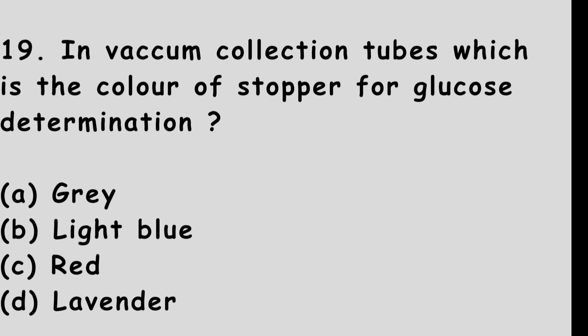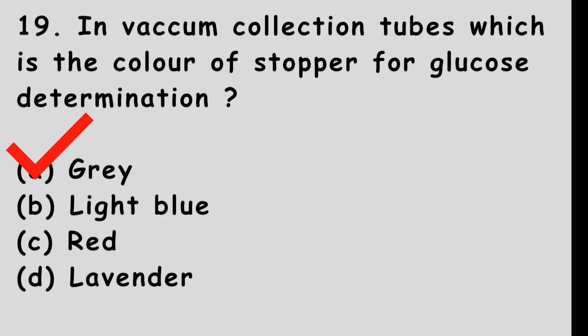Question number 19: In vacuum collection tubes, which is the color of stopper for glucose determination? Option A: Gray. Option B: Light blue. Option C: Red. Option D: Lavender. The right answer is option A, gray. The sodium fluoride tube is used for sugar estimation and its color is gray.